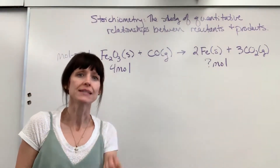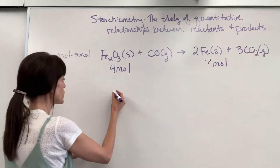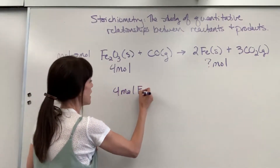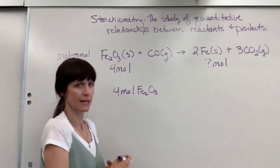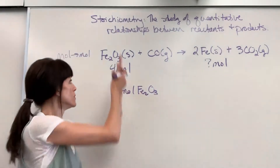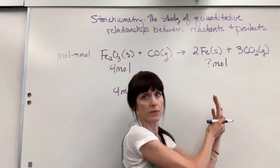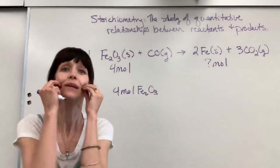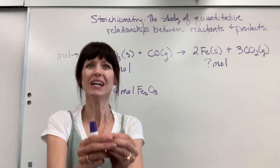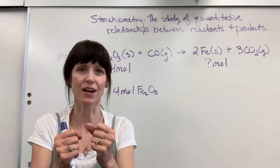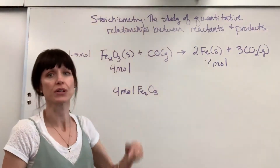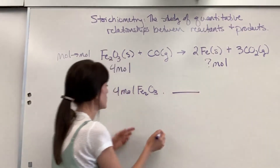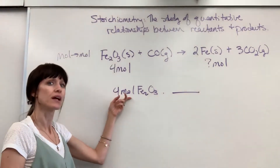Step three: write down what you're given. We are given four moles of iron three oxide. To walk from one compound to another, you have to use the molar ratio — that's the key word, the heart of all stoichiometry. The molar ratio means you have to have moles right here.